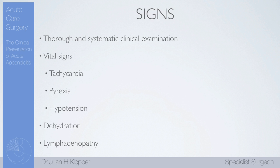Let's move on to the signs. A thorough and systematic clinical examination head to toe. Starting with vital signs — most patients will have a tachycardia, not necessarily over 100 by definition, but certainly an elevated heart rate. Very common to have a low-grade pyrexia. Patients with a higher temperature might suggest something else, maybe a viral infection, or that the appendicitis has become severely complicated. Hypotension is a bad sign — usually a sign that septicemia and septic shock has set in.